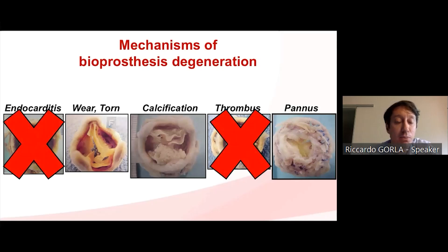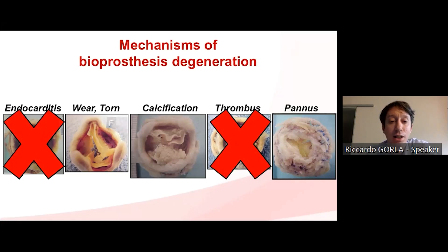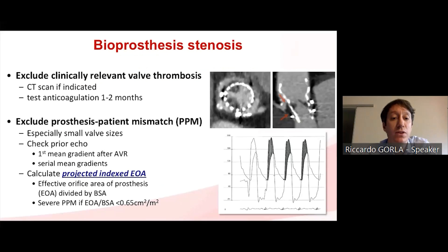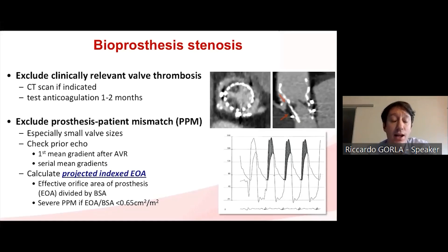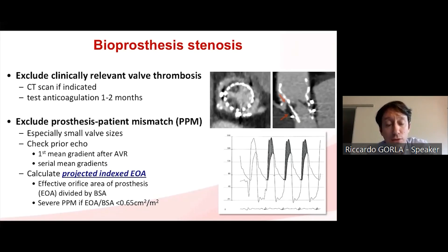You have to exclude the presence of endocarditis or thrombus formation on the valve, because these two conditions cannot be treated with valve-in-valve TAVR. In the presence of valve thrombosis, anticoagulation has been demonstrated to be effective, and usually you perform one to two months of full anticoagulation.